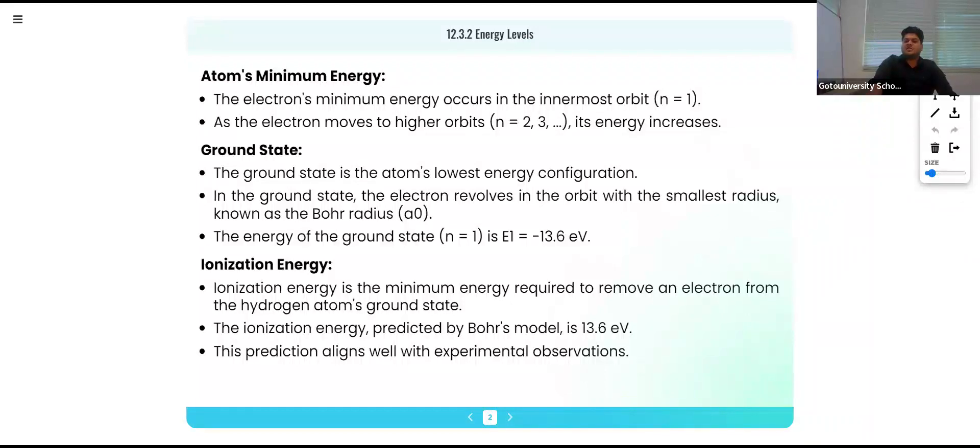The electron's minimum energy occurs in the innermost orbit. As the electron moves to higher orbits, its energy increases. The ground state is the atom's lowest energy configuration. In the ground state, the electron revolves in the orbit with the smallest radius, known as Bohr's radius. The energy of the ground state is E1 equals minus 13.6 eV. The ionization energy is the minimum energy required to remove an electron from the hydrogen atom's ground state. The ionization energy predicted by Bohr's model is 13.6 eV.